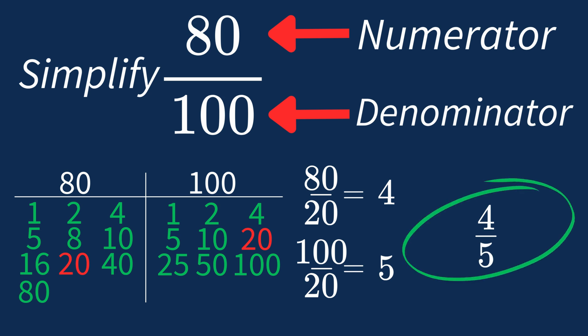And we know that 4 over 5 is in its simplest form, because the only common factor between 4 and 5 is 1. And when 1 is the largest common factor, we know that fraction is already in its simplest form.